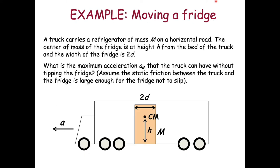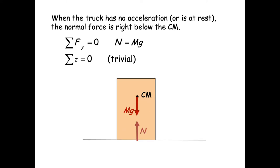Now let's do an example with a moving fridge. A truck carries a refrigerator of mass M on a horizontal road. The center of mass of the fridge is at height H from the truck bed, and the width of the fridge is 2D. We want the maximum acceleration the truck can have without tipping the fridge, assuming static friction is large enough that the fridge doesn't slip. When the truck is at rest, the normal force is right below the center of mass, and the sum of y-forces and torques are trivially zero.